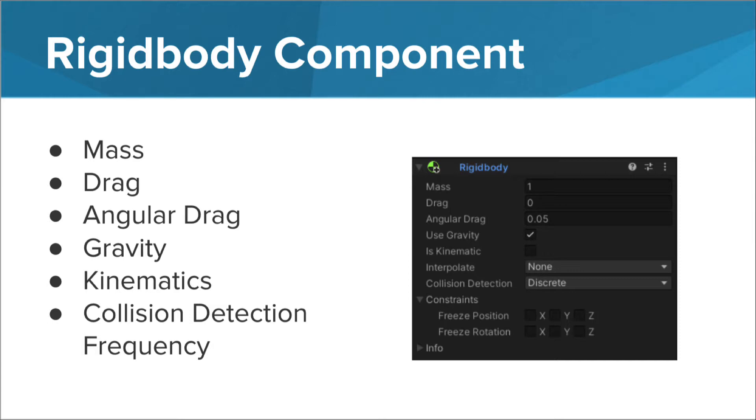Game objects must contain a rigid body component to be influenced by gravity, act under added forces via scripting, or interact with other objects through the physics engine.